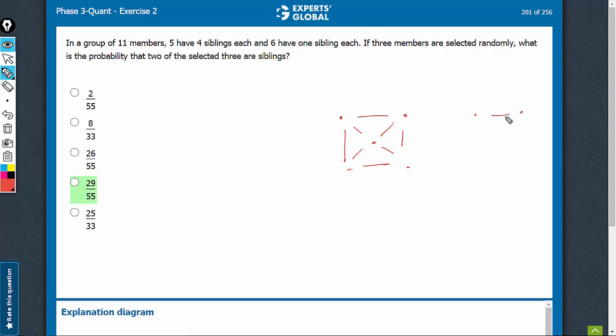So, that means something like this. There are 3 separate pairs of siblings. That's 1 pair, that's 2nd pair and that's 3rd pair.